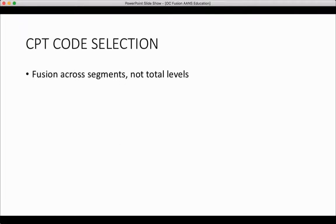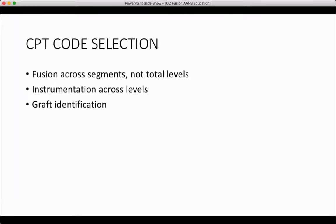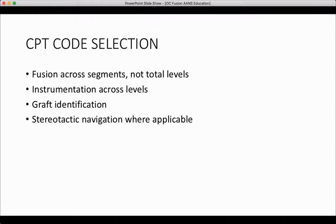As in other parts of the spine, CPT code selection relies on proper selection of codes for fusion as well as instrumentation, graft identification, and stereotactic navigation. Just as in the subaxial spine, fusion is numbered by the segments involved and instrumentation at the spinal levels.